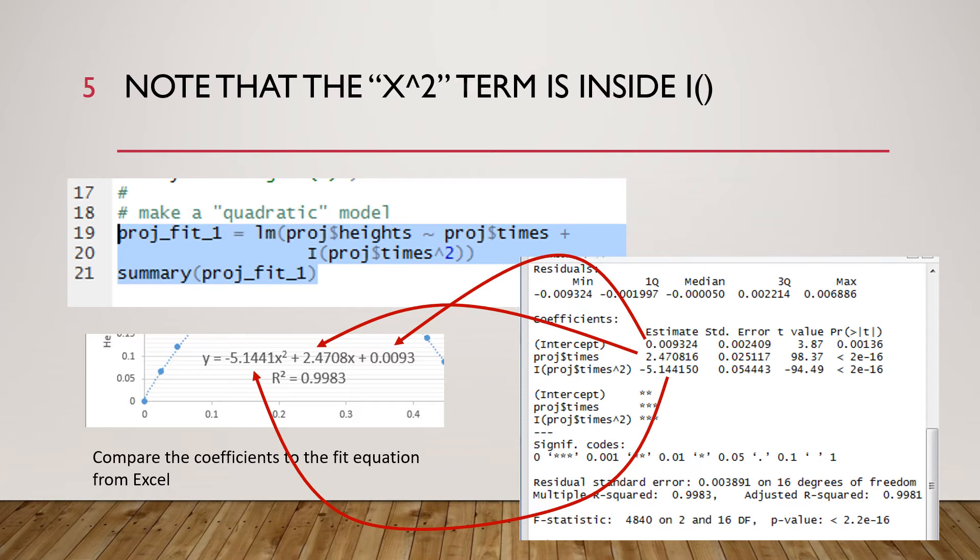In line 21 we are getting a summary of proj underscore fit underscore one and then we see that summary in the console and we are comparing it to the fit we got in Excel and we are seeing the same numbers. So the intercept we see that in the fit from Excel, the linear term the slope and the square term we see all these that we had in Excel are now over in R.